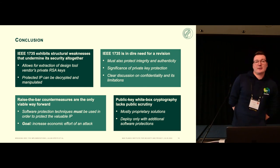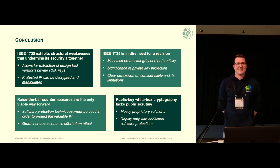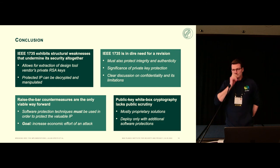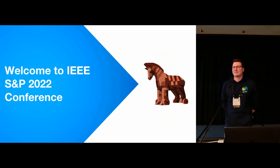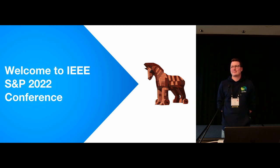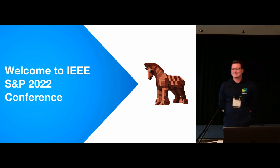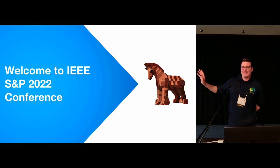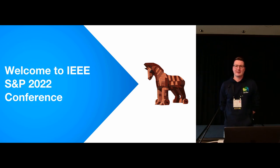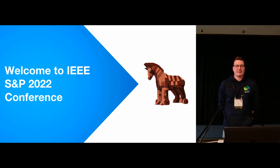Q&A — Audience member (Animesh, University of Florida): In our CCS'17 work, we found weaknesses in the IEEE standard and upon responsible disclosure received a cease-and-desist notice from one of the vendors. How was your interaction with the vendors? Speaker: For the six vendors we published about here, they were nice to us — we had a good and productive exchange, and most of them have already tackled the issues and deployed stronger software protections. On the rest, I prefer not to comment.